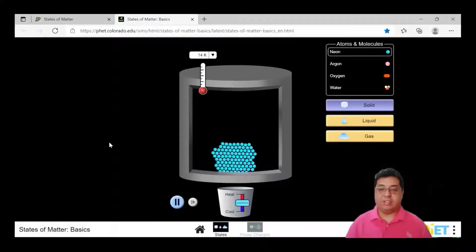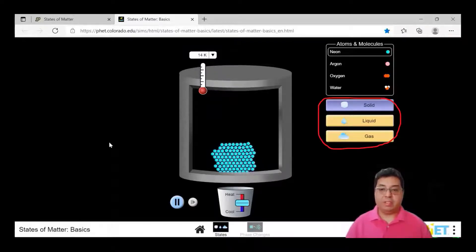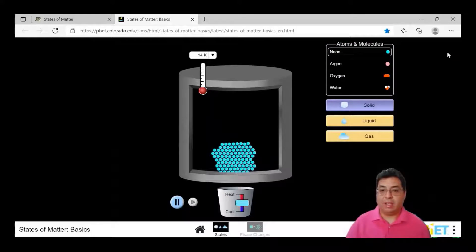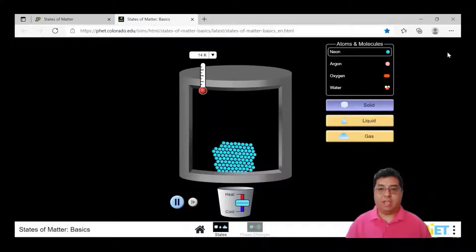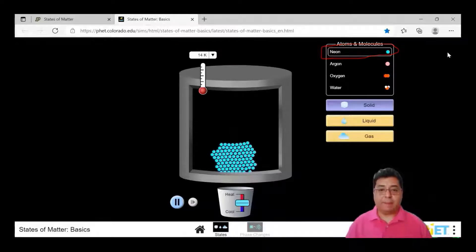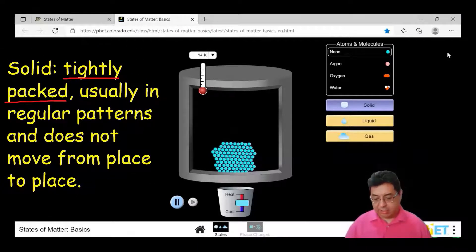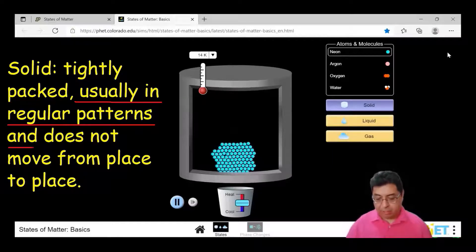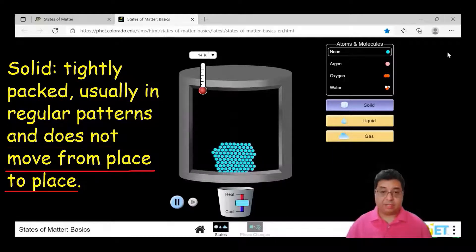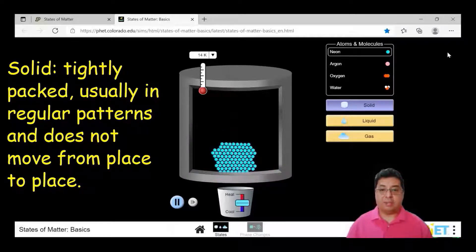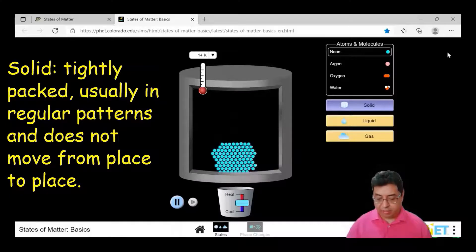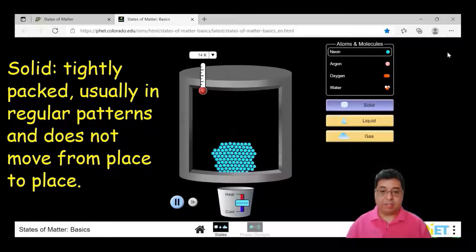As you can see, it's showing you basically how to do an experiment with solid, liquid, and a gas. Now you have different atoms and molecules up here that you can look at. For the sake of this video and to make it easier to see, I'm just going to stick to neon here. We're just going to apply what the definitions are with this website. As I said, a solid is tightly packed, usually in regular patterns and does not move from place to place. As you can see here, it's applying that. It's tightly packed. It's not moving at all really from place to place, but it has some vibration or you can see some movement here.